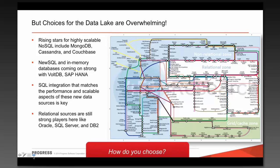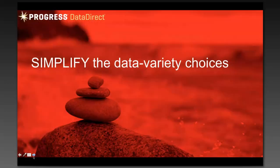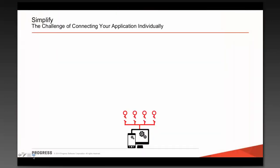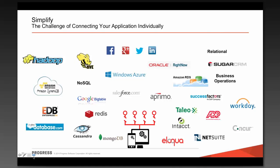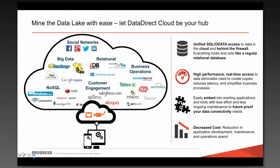One of the first things we have to do is figure out how to choose. We're working in the industry to simplify data variety choices for our customers. A typical example: someone writes an application thinking they're going to connect to one source, but six months down the road requirements change and they have to add another source. Point-to-point connections to each one of the different sources that could be available is a very tedious, time-consuming, and expensive thing. What you really want is one unified access point — one data hub — that can access anything in the cloud or behind the firewall, that can be used with any type of BI tool, and that is really, really fast.